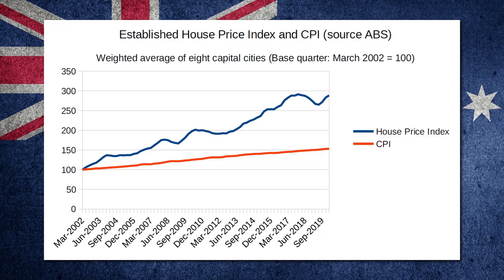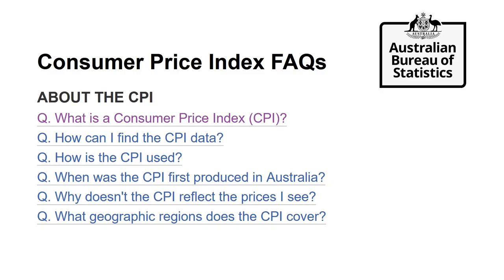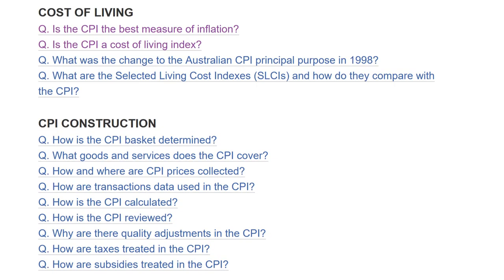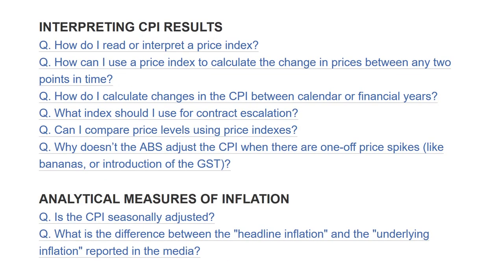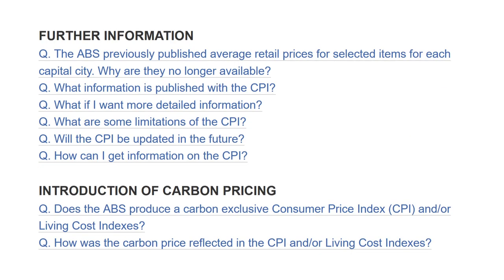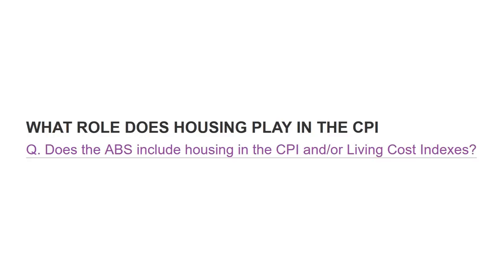My first instinct was that house prices are simply not included in inflation data. I mean, if they were, then surely CPI should be rising at a much greater rate. So I consulted the ABS's Consumer Price Index FAQ. Scrolling through, there are tons of questions about cost of living, CPI construction, interpreting CPI results, analytical measures of inflation, further information, introduction of carbon pricing — and the very last question, and I'm not joking here, is: what role does housing play in the CPI?